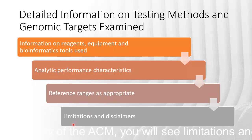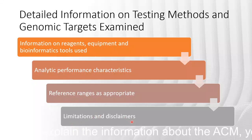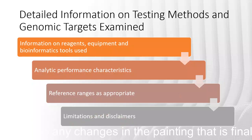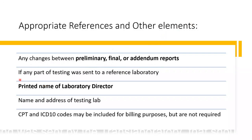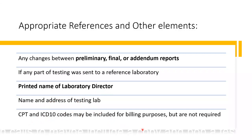Limitations and disclaimers should also be mentioned in the report. If you have made any changes in the preliminary, final, or addendum reports, that should be mentioned clearly. If any part of testing was sent to a reference laboratory, that should also be documented. Include the printed name of the laboratory director, name and address of the testing lab, and CPT and ICD-10 codes, which may be included for billing purposes but are not required.